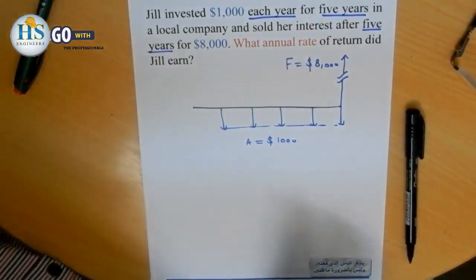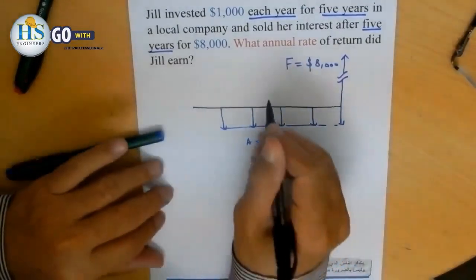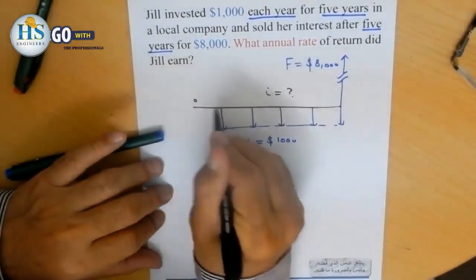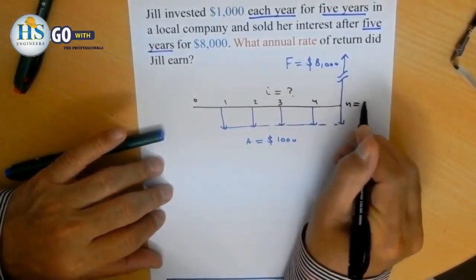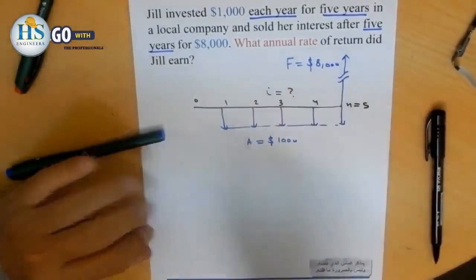Now we want to find I, the unknown. If N equals 5, and E is known, and F is known...